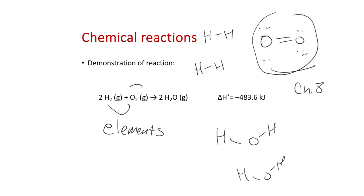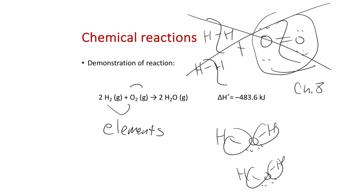We'll cover Lewis structure rules in Chapter 8. The chemical reaction goes: we start with H2 and O2, break those bonds, and form new chemical bonds between oxygen and hydrogen. A chemical reaction is where we actually change the chemical bonding between reactants and products — we exchange the types of bonds. Each molecule of H2 contains two H atoms; each molecule of O2 contains two O atoms.